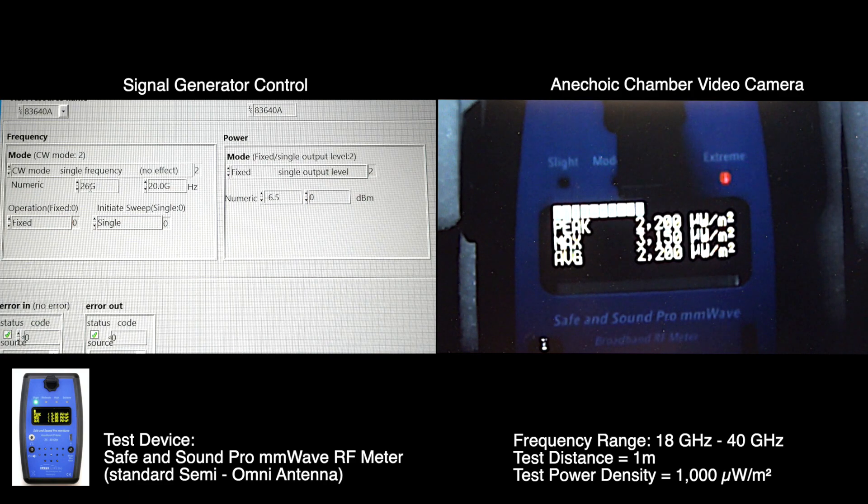Let's go to 26 gigahertz. Minus 6.1 dBm. 3000 microwatts per square meter.